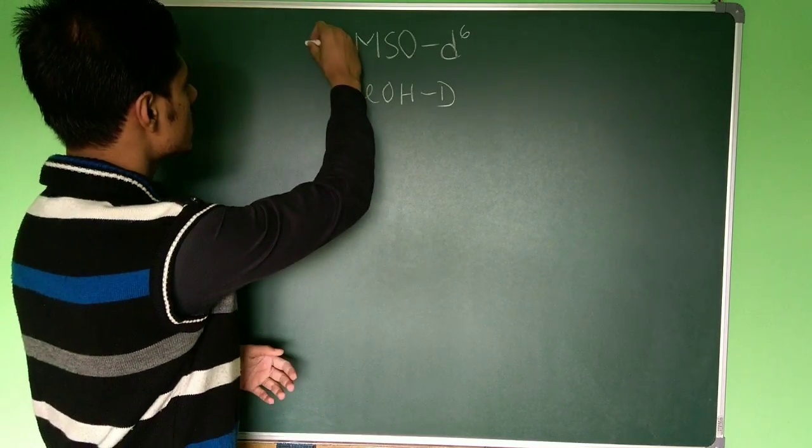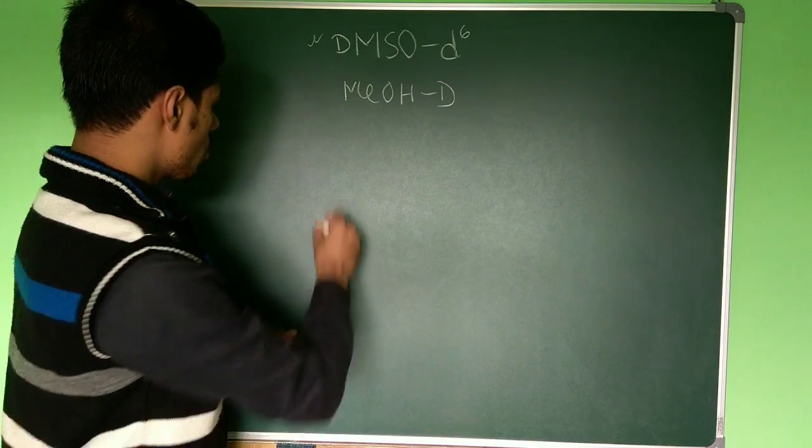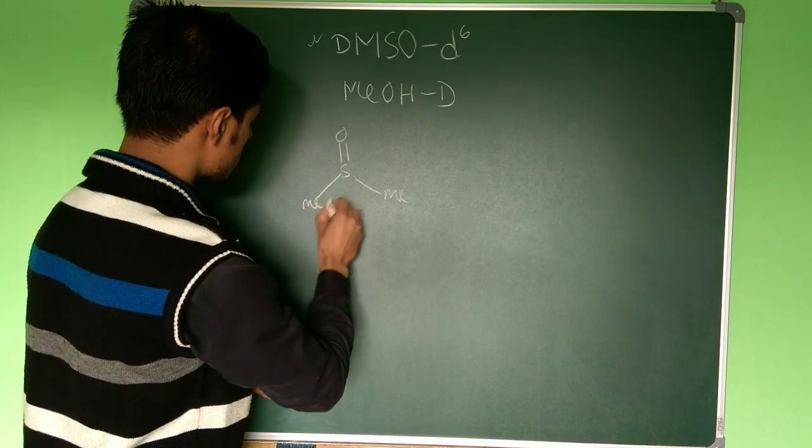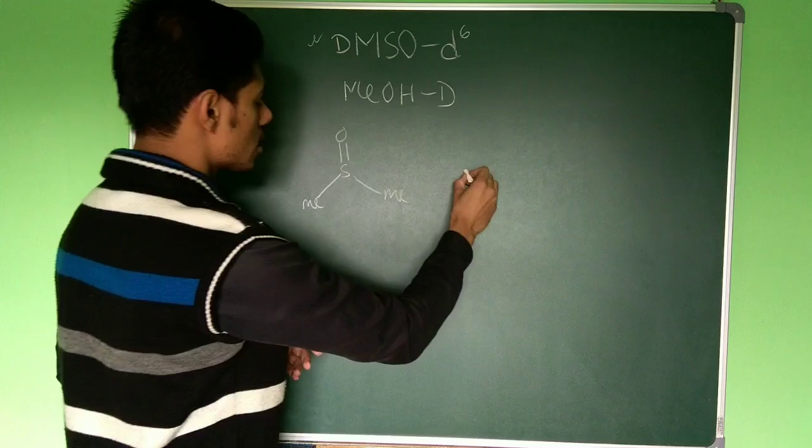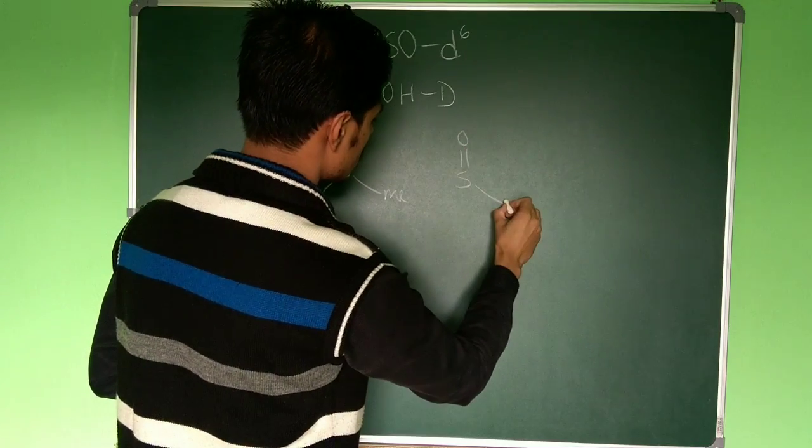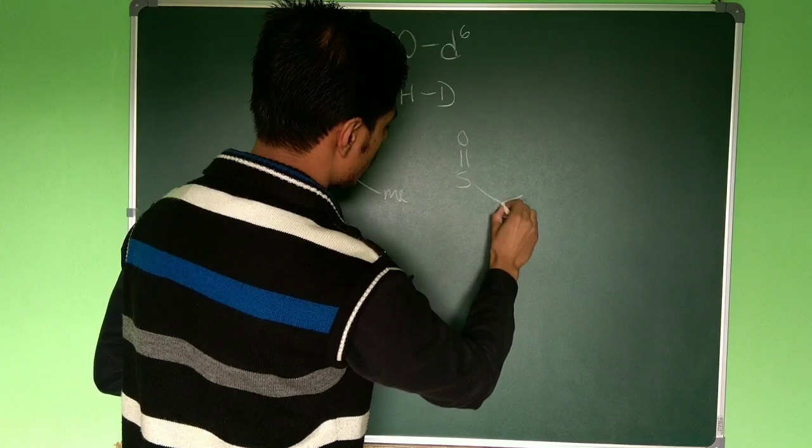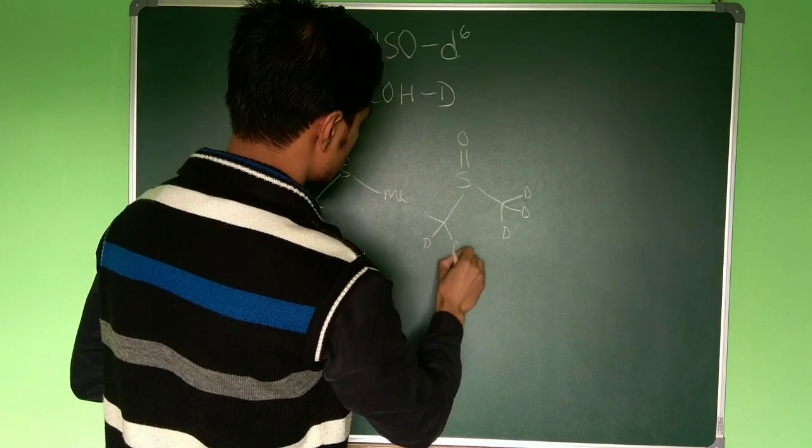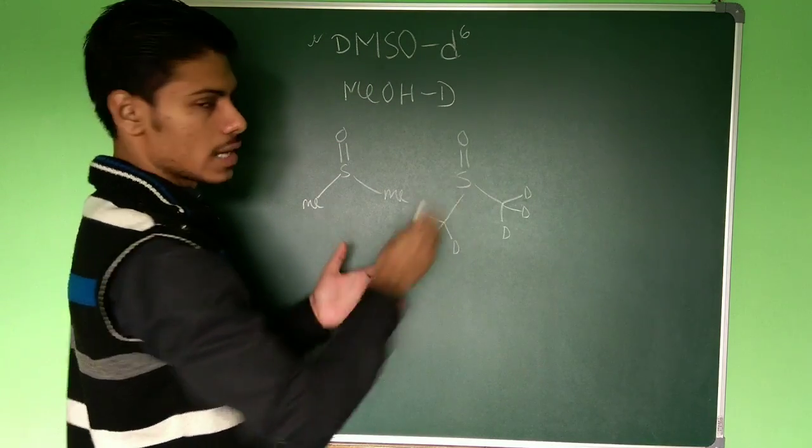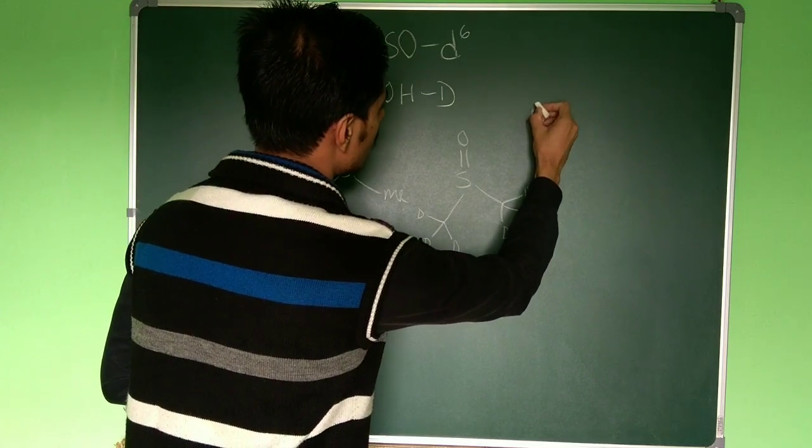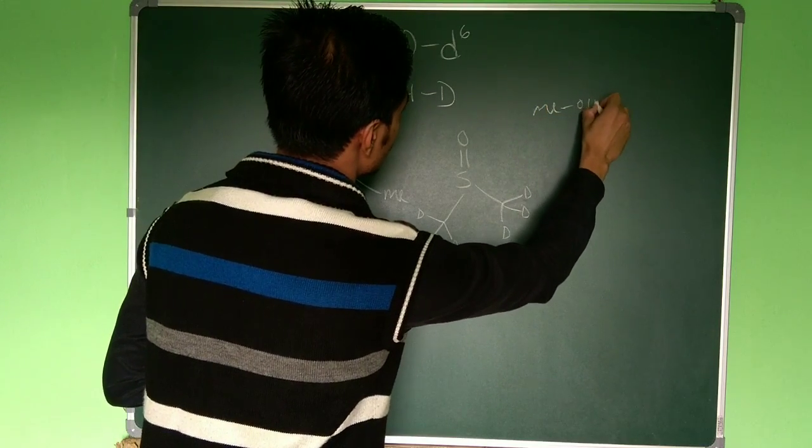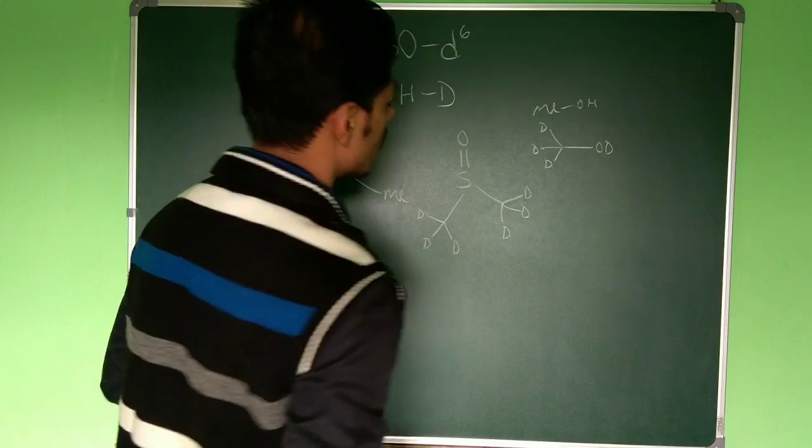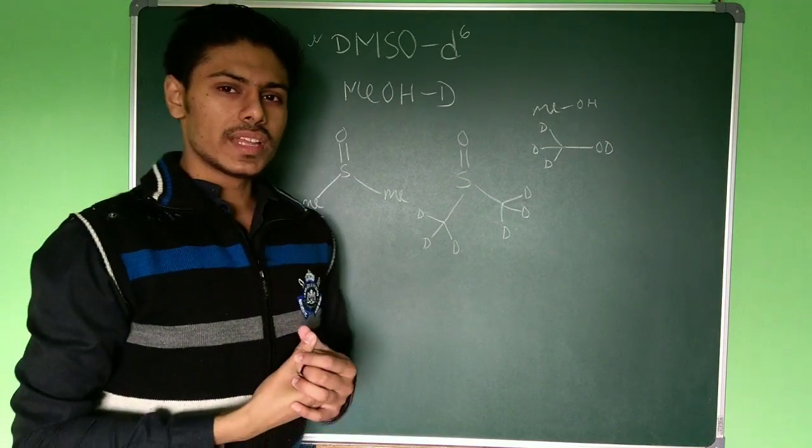First, let us take the case of DMSO-D6. This is the structure of DMSO - DMSO-D5 sulfoxide. Now what is DMSO-D6? In this case, all the hydrogens are replaced by deuterium. This is called DMSO-D6. And methanol-D - normal methanol is MeOH and methanol-D is where all the hydrogens are replaced by deuterium.